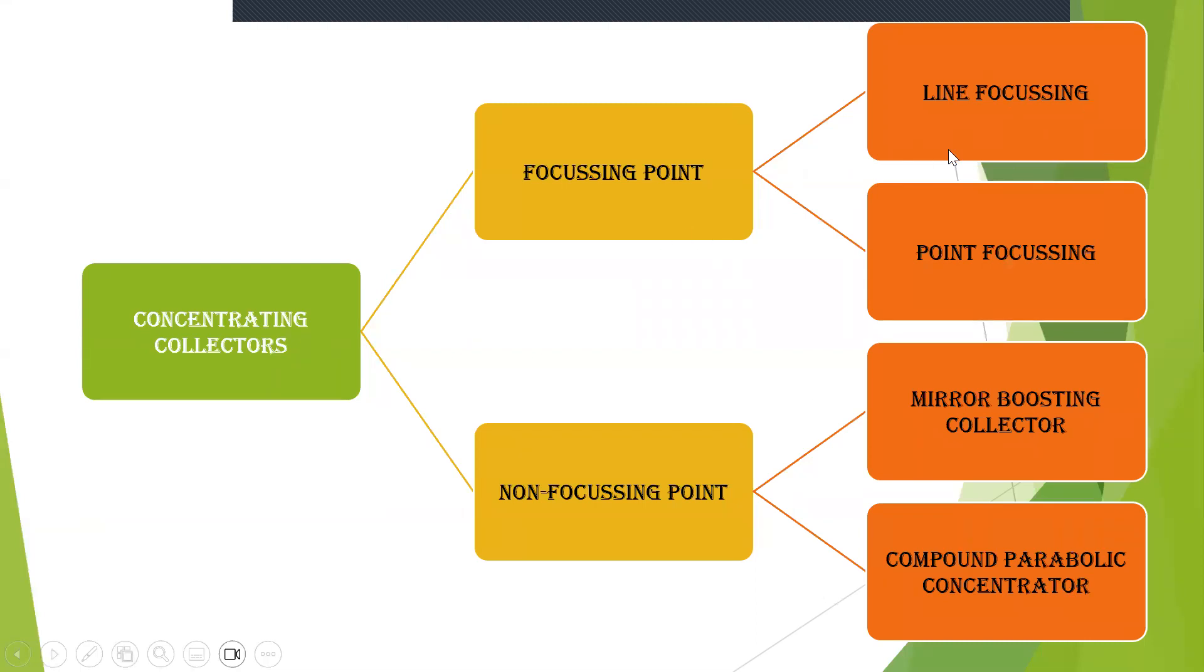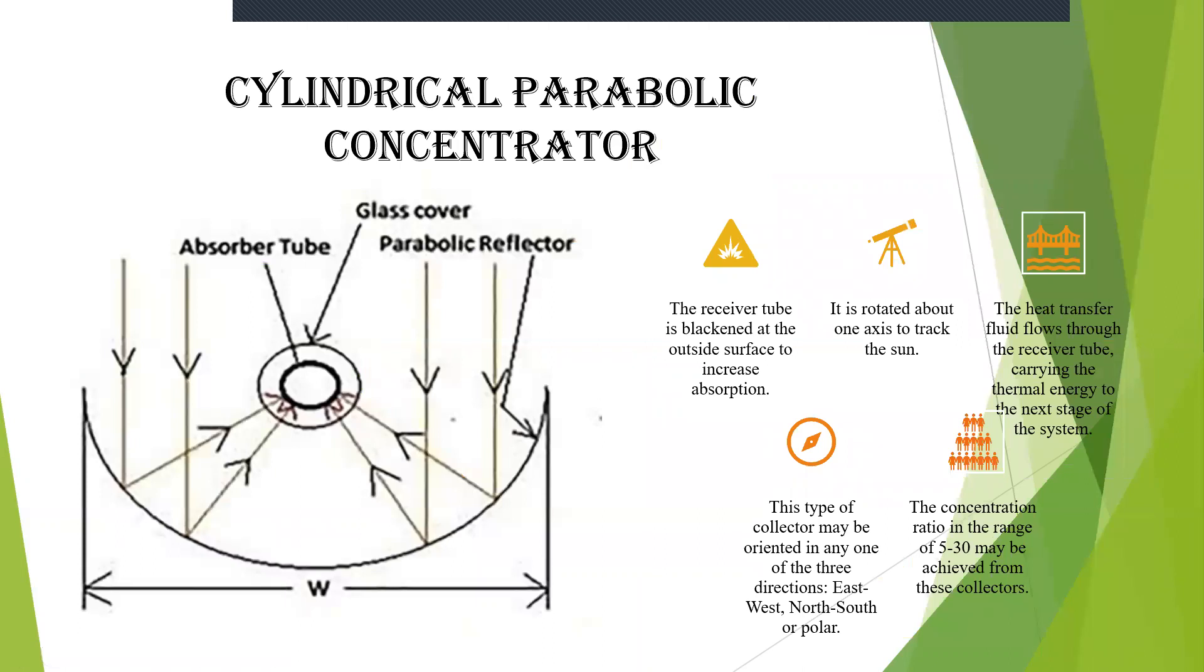This line and point facing will be further divided into different types of collectors like parabolic line, line focusing is further divided as parabolic trough collector, mirror strip collector, cylindrical parabolic collectors and when you are considering about the point focusing there is paraboloidal, central trough collector, all these collectors comes under point focusing. In non-focusing you have two that is your mirror boosting and compound parabolic.